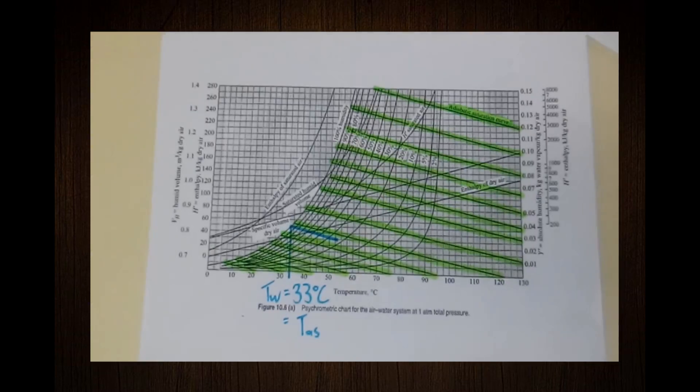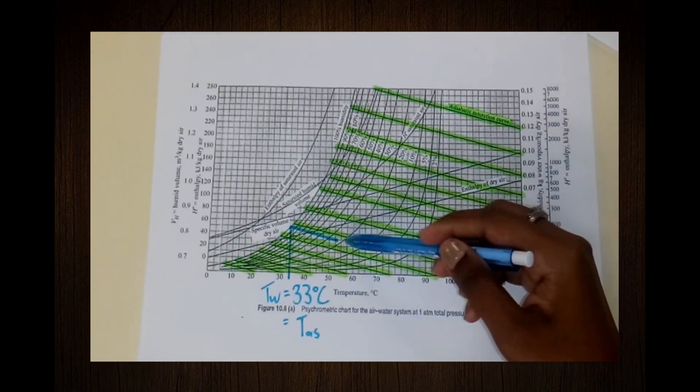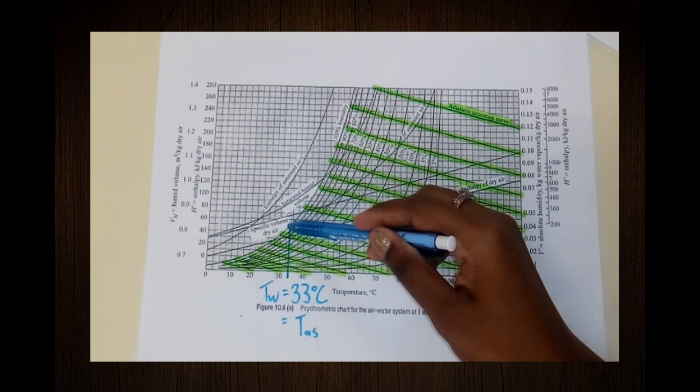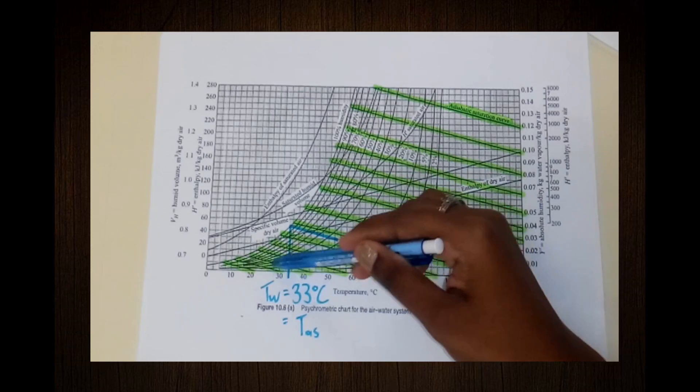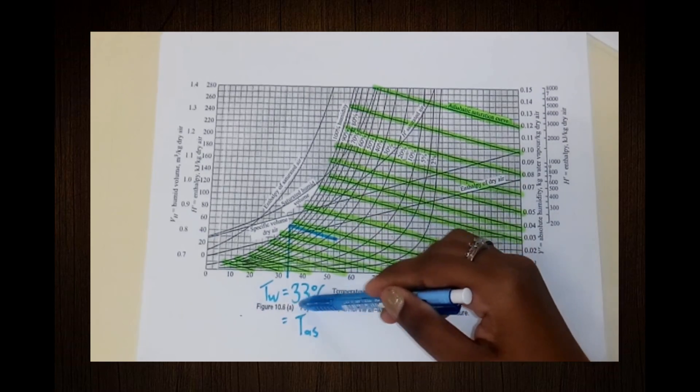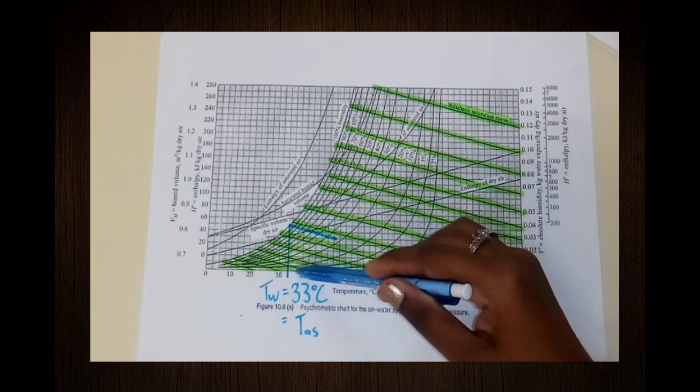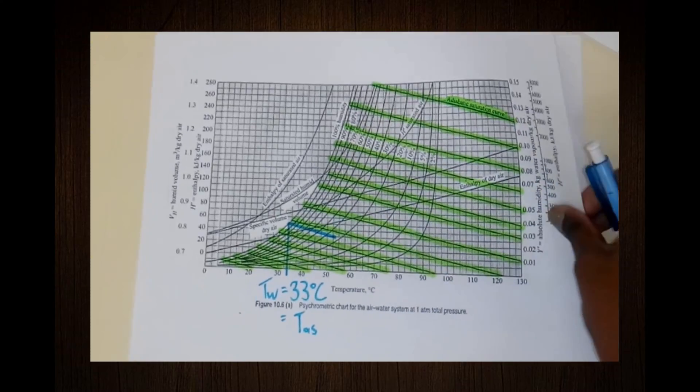Let's look at the adiabatic saturation line. Again, our point is not on these lines. Draw a line parallel with this line from the point to the hundred percent humidity curve. The corresponding temperature is wet bulb temperature, which is 33 degrees Celsius. Wet bulb temperature and adiabatic saturation temperature are practically the same for air-water systems.